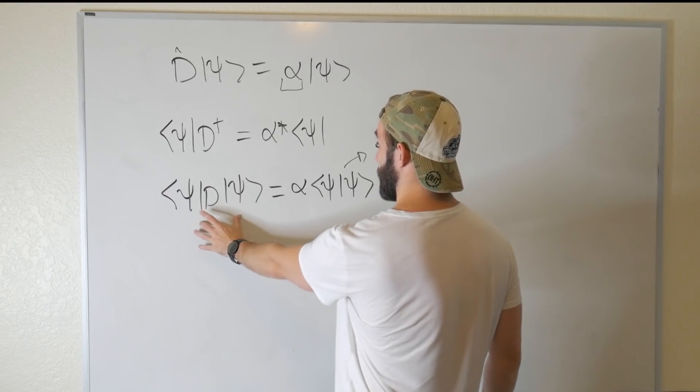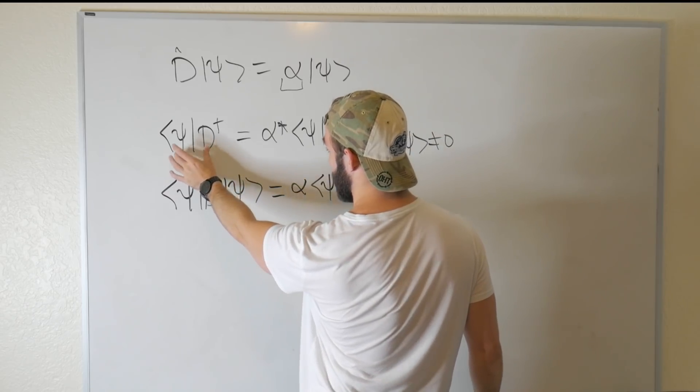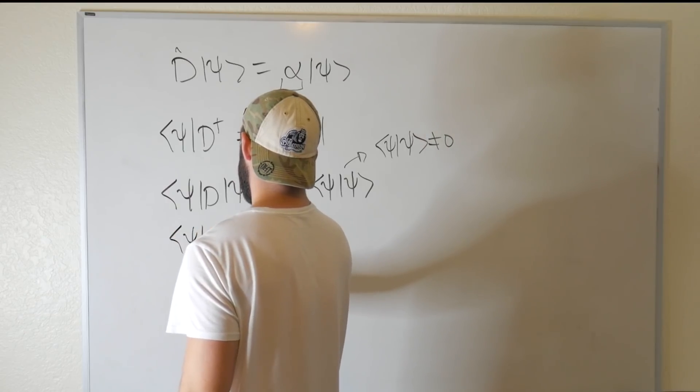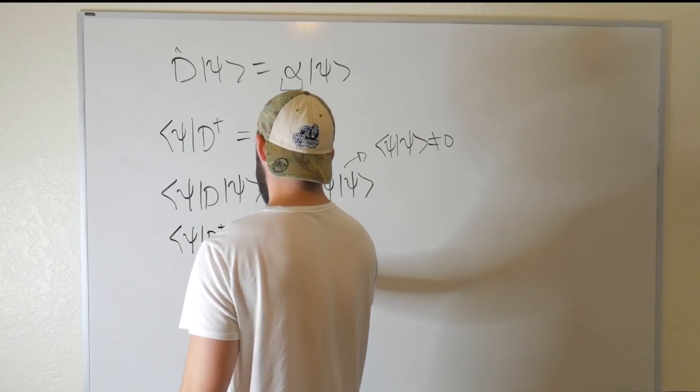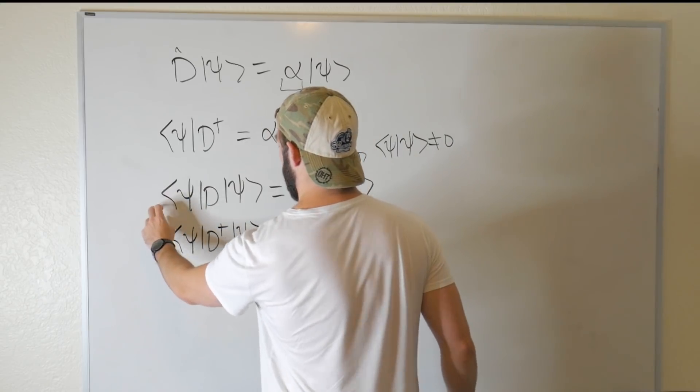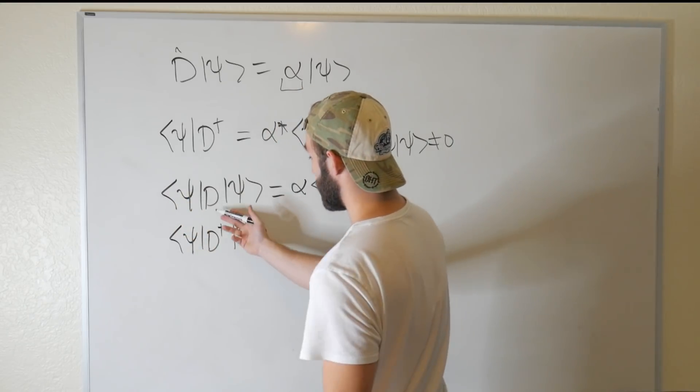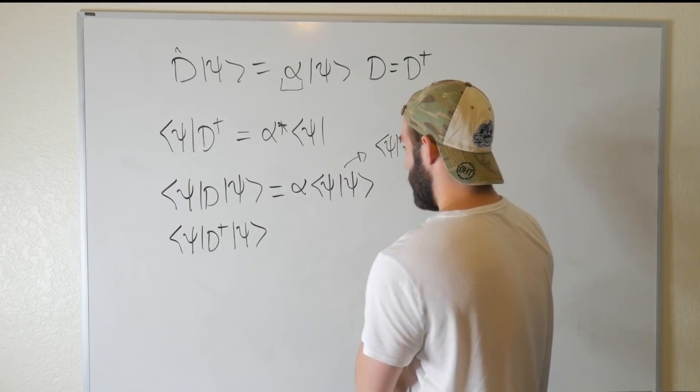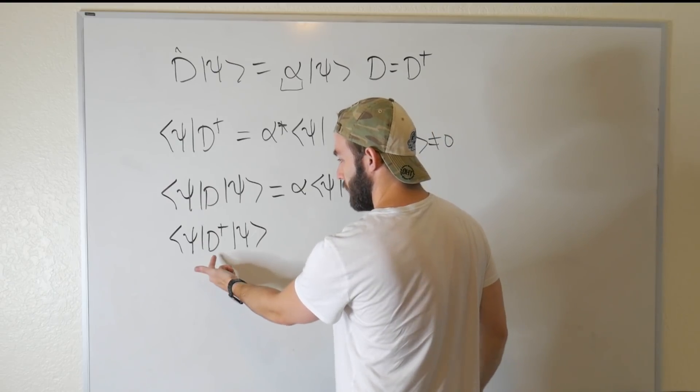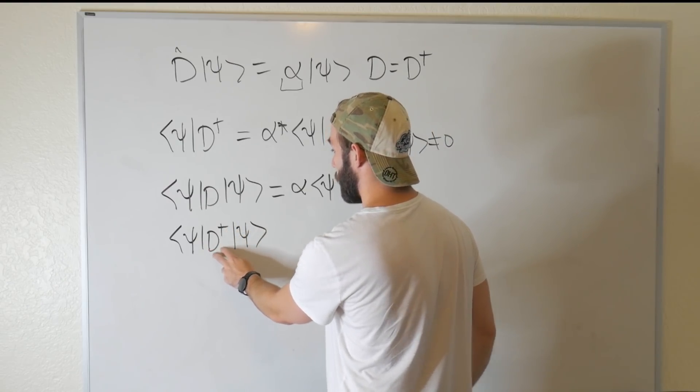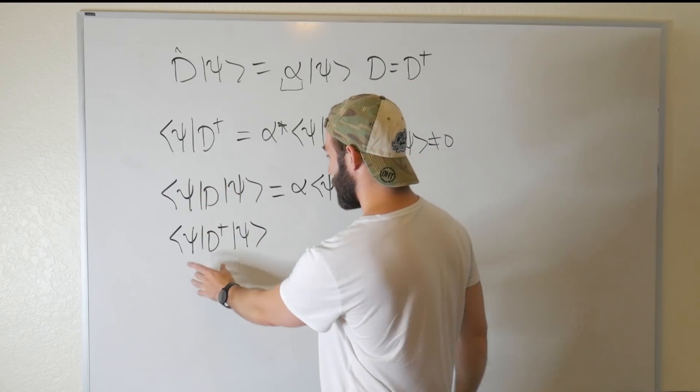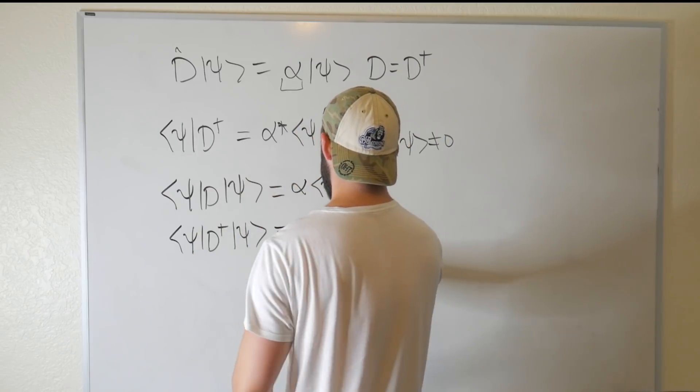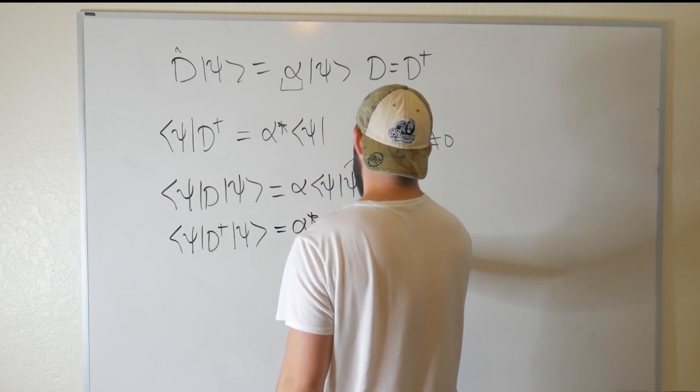Let's do the exact same thing, but with this second equation here. So we're going to take the inner product with our ket vector. So we have ⟨ψ|D†|ψ⟩. And these two things should be equivalent at the end of the day, because if we're working with a Hermitian operator, that means that D is equal to D†. But let's go ahead and carry this out anyways. We know that if we have a Hermitian conjugate of our operator, that means that it's now acting to the left. It's acting on our bra. And this is going to equal α*⟨ψ|ψ⟩.